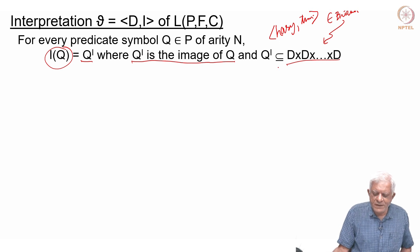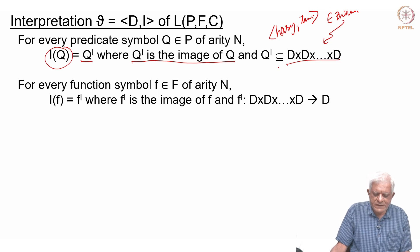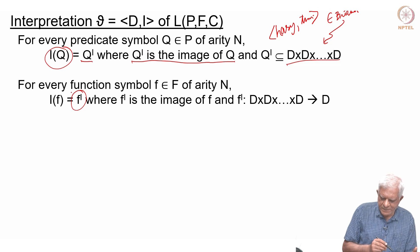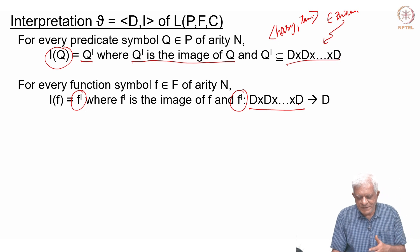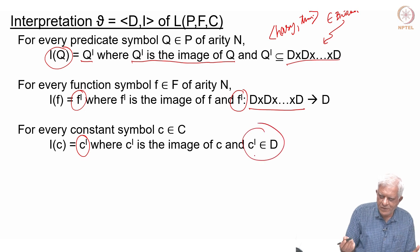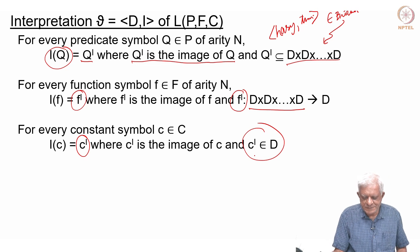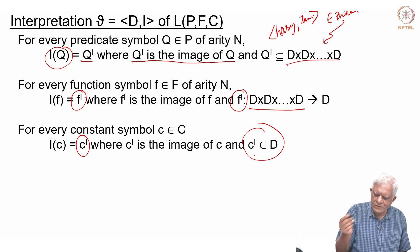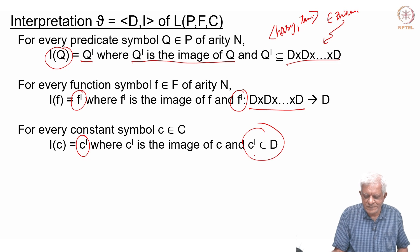Likewise, for every function symbol f of arity n, its image f superscript I is a function from D × D × ... × D (n times) to D — a mapping from a set of individuals to one individual in the domain. For every constant symbol c, its image c superscript I must be an element of the domain. So: constants are elements of the domain, functions are functions on the domain mapping to elements, and predicates are relations on the domain — subsets of D^n.